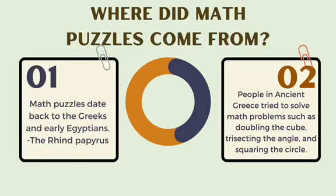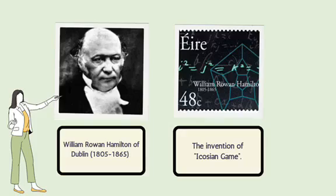These types of puzzles carry recreational as well as educational value for the pupils. But one of the people who discovered math puzzles was William Rowan Hamilton of Dublin, 1805-1865, who is considered the most important Irish mathematician.